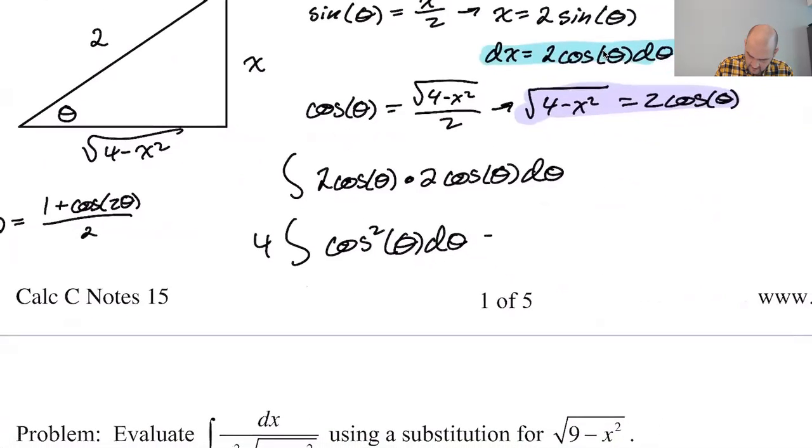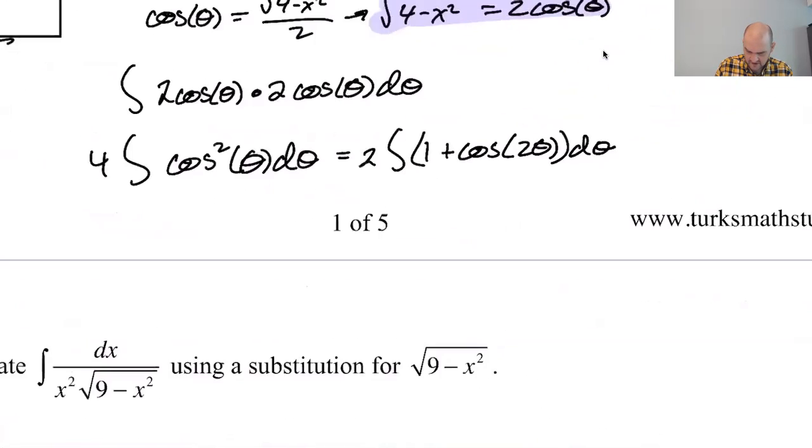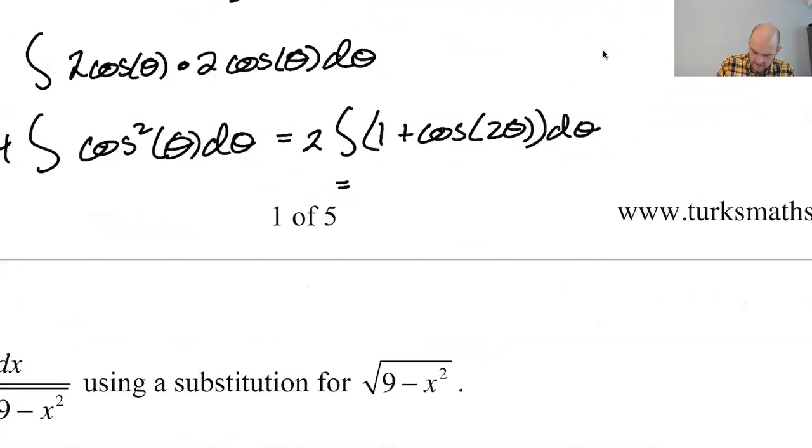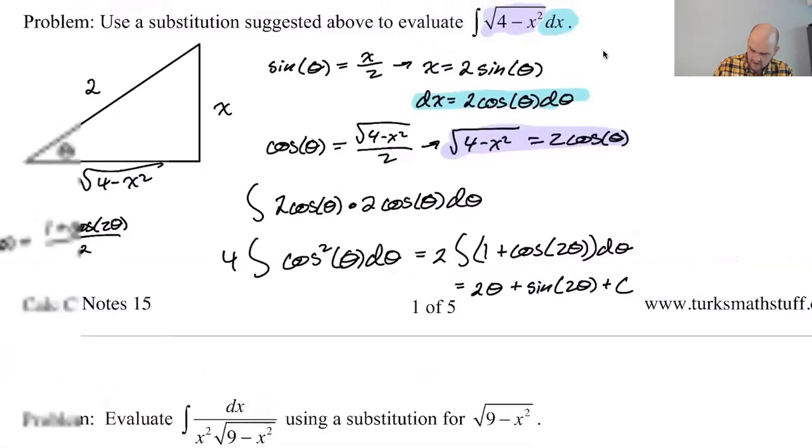So if I take, I'm going to take out the one half that that gives me and make this two times the integral of one plus cosine of two theta. There's not enough room for this problem. Shocking that any of my notes would not have enough room. So this will be two theta and then plus one half sine of two theta plus C.